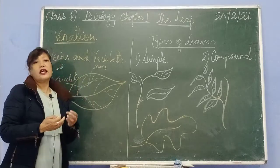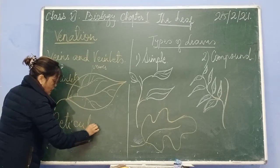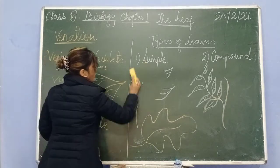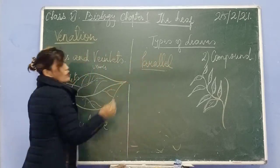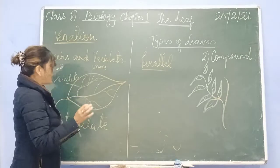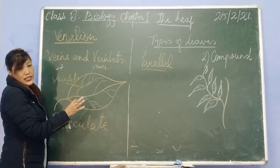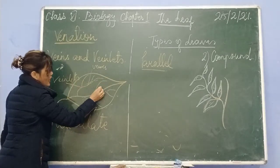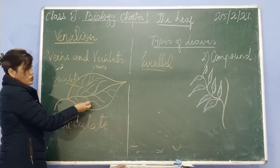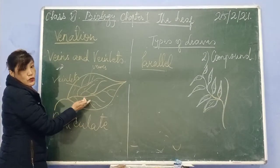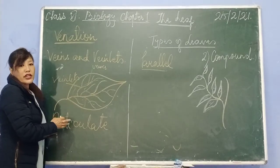There are two types of venation: one is reticulate and the other one is parallel venation. The term reticulate means net-like. When the veins and veinlets are irregularly distributed over the entire lamina forming a network, that type of venation is called reticulate venation. You can see how the veins and veinlets are distributed irregularly over the entire lamina forming a network — these are called reticulate venation.